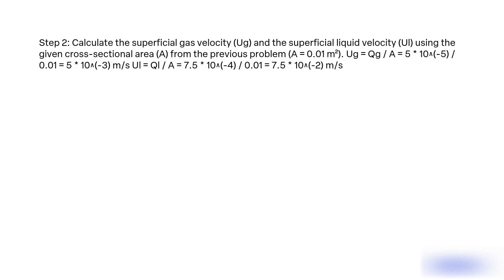Step 2: Calculate the superficial gas velocity UG and the superficial liquid velocity UL using the given cross-sectional area A = 0.1 m² from the previous problem. UG = QG / A = 5 × 10⁻⁵ / 0.1 = 5 × 10⁻³ m/s. UL = QL / A = 7.5 × 10⁻⁴ / 0.1 = 7.5 × 10⁻² m/s.